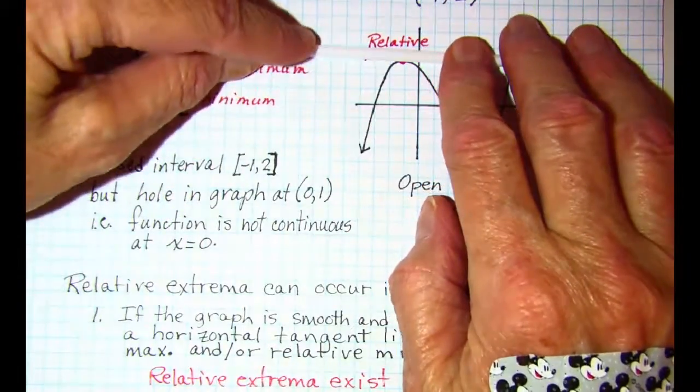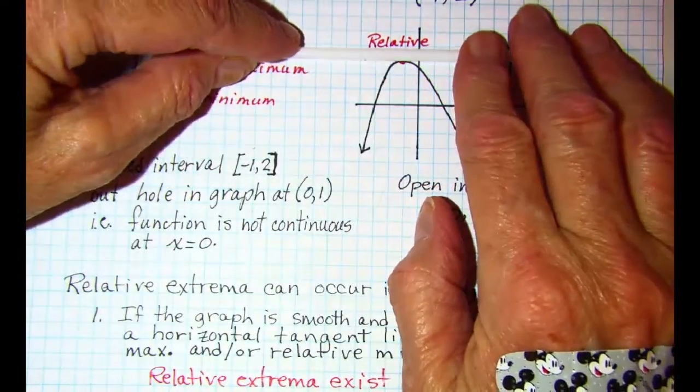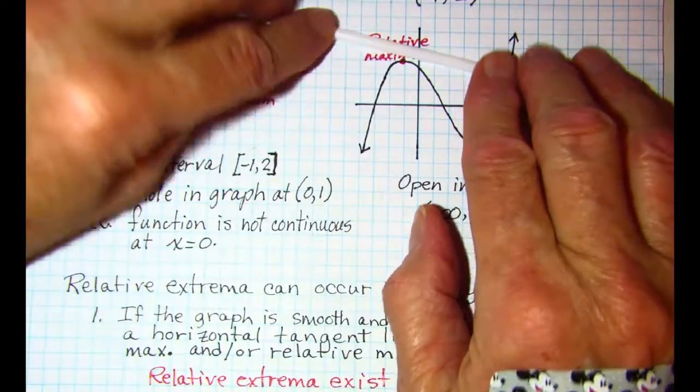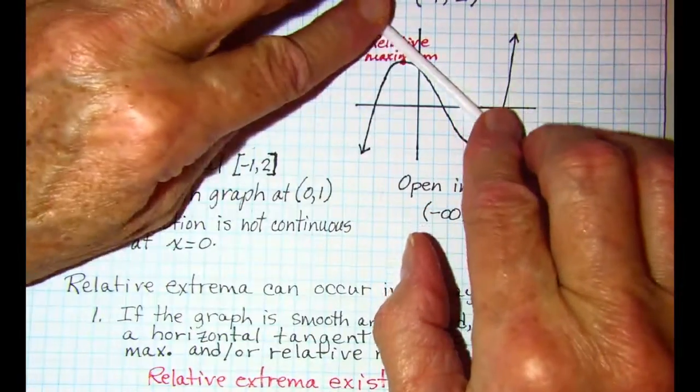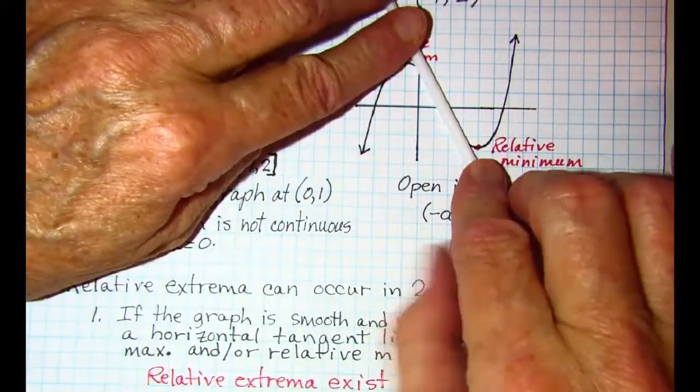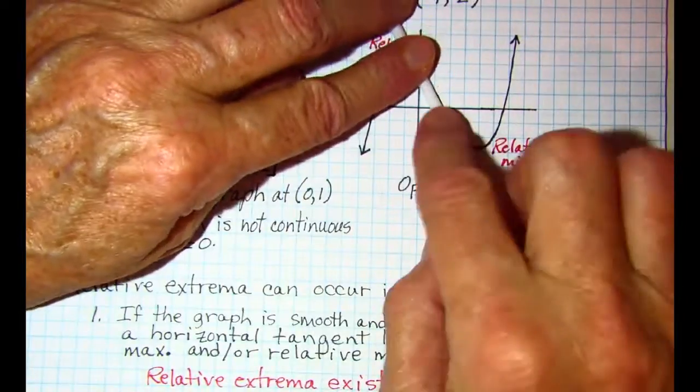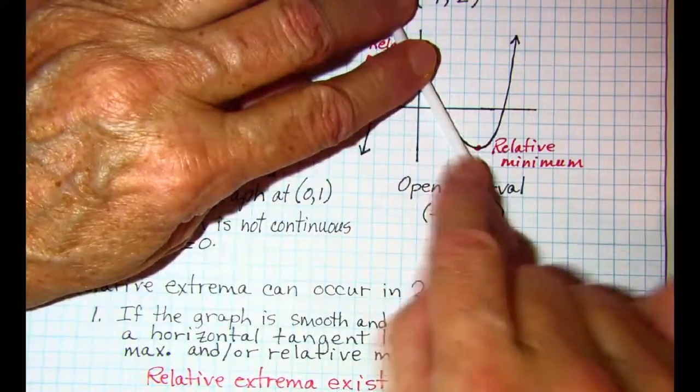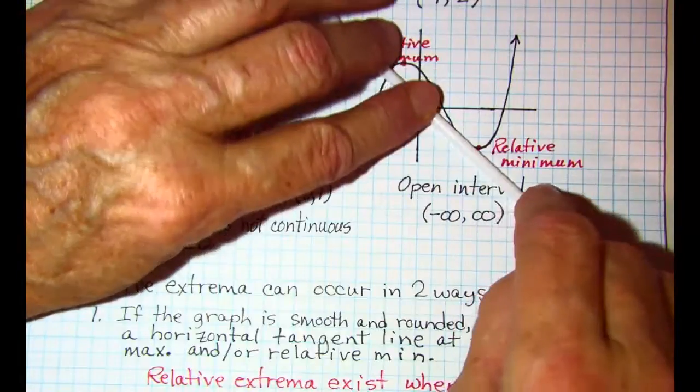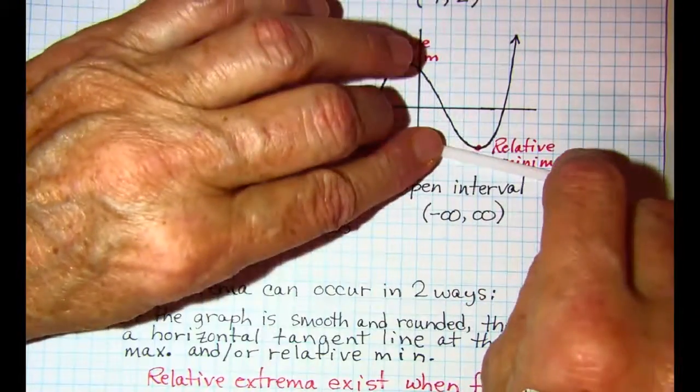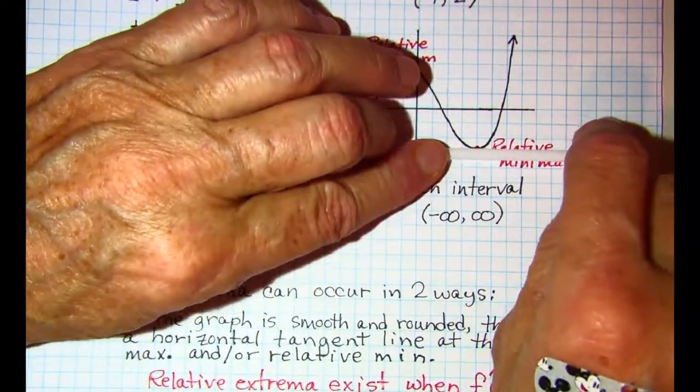my tangent line becomes horizontal. And then when we go back down it has a negative slope until I come over close to my relative min, and then my tangent line again is horizontal.